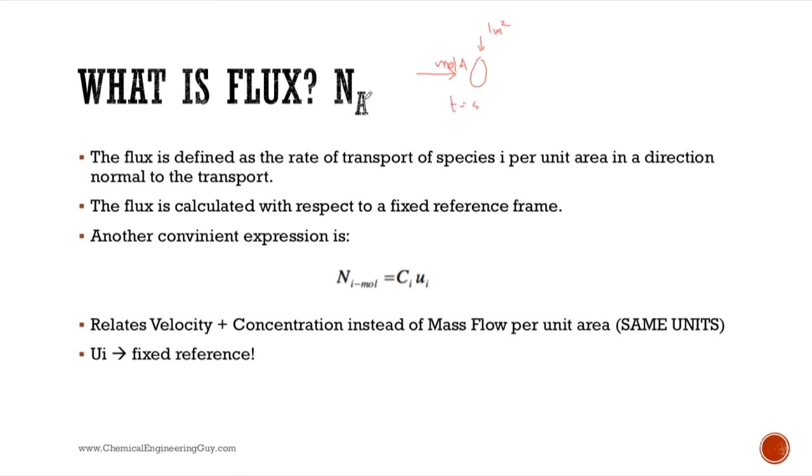The units are mole of A per second per meter squared. Flux is defined as the rate of transport of species i, which in this case will be A (remember that i can be A, B, C, D, etc.), per unit area in a direction normal to the transport. This is important - normal must be across the flow rate.